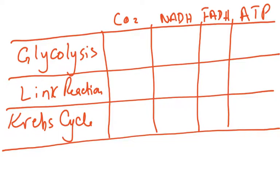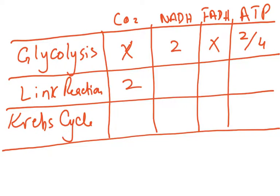Now let's fill in the table, which has come up in many exam papers. In glycolysis: no carbon dioxide produced, two NADH produced, no FADH, and a net gain of two ATP (or four ATP gross). In the link reaction: two carbon dioxide (one per pyruvate), two NADH, no FADH, and no ATP.